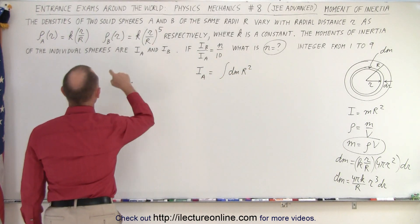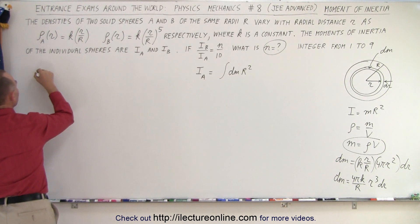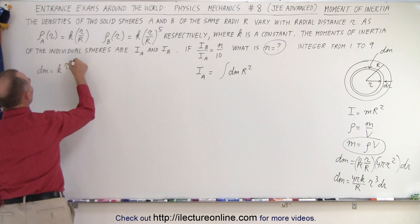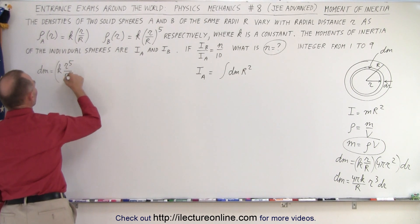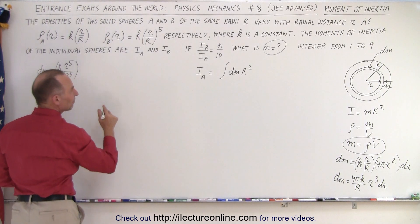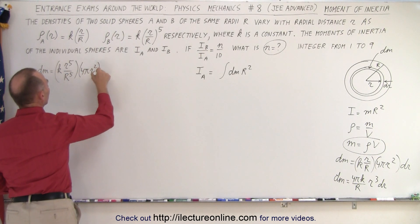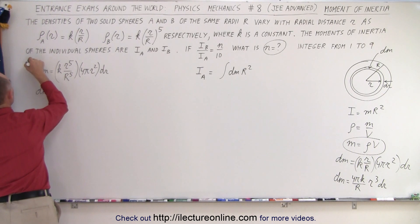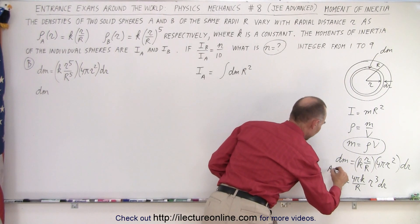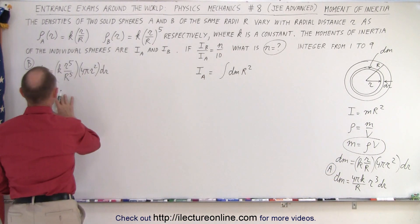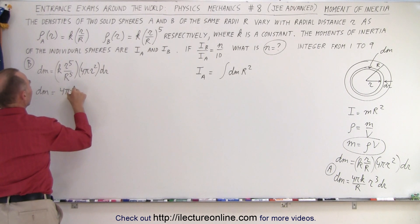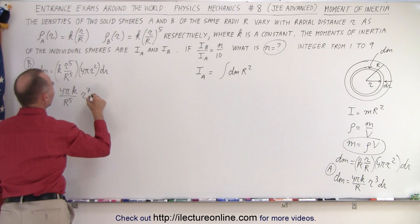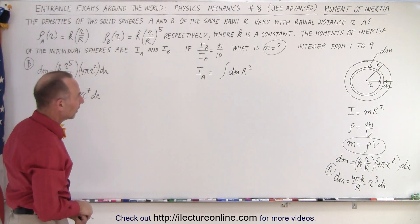Doing the same for sphere B: DM equals the density, which is K times r to the fifth over R to the fifth, times the volume element 4πr² dr. So DM for B equals 4πK over R to the fifth times r to the seventh dr.